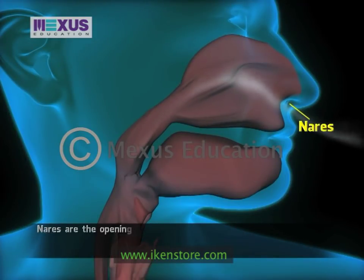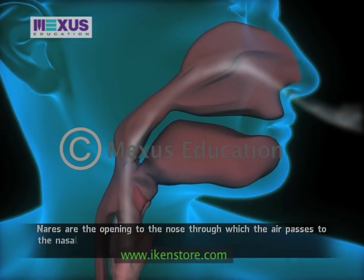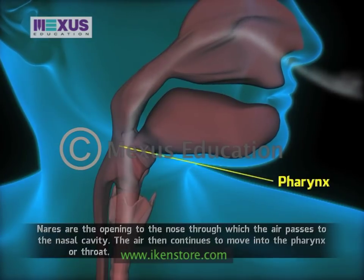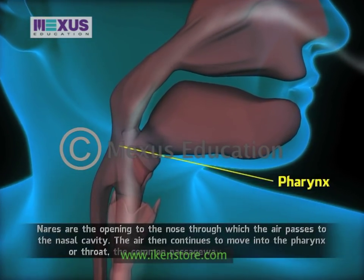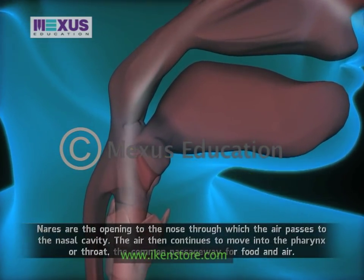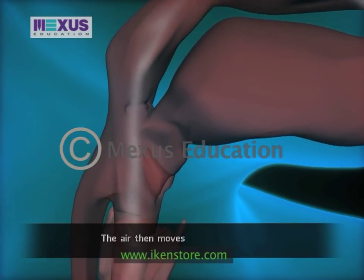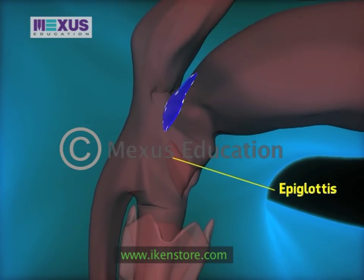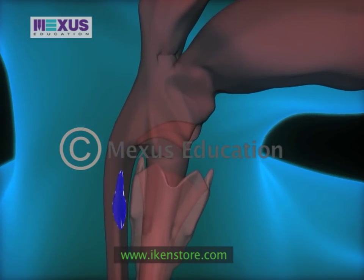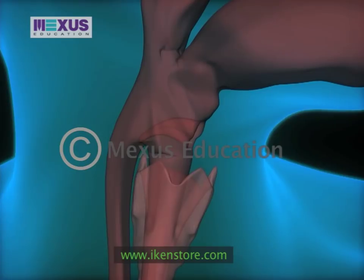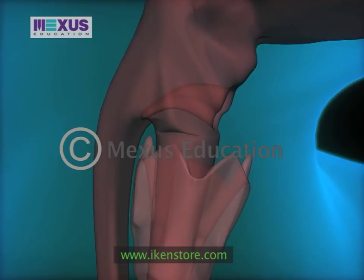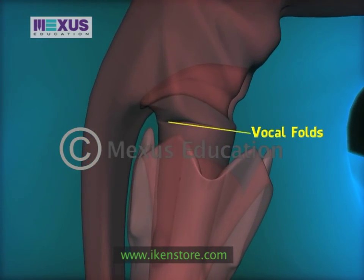Nares are the openings to the nose through which air passes to the nasal cavity. The air then continues to move into the pharynx, or throat, which is the common passageway for food and air. The air then moves on to the larynx. The epiglottis, a tissue in front of the larynx, closes off the larynx when swallowing to prevent food from entering. The larynx, or voice box, contains the vocal folds.